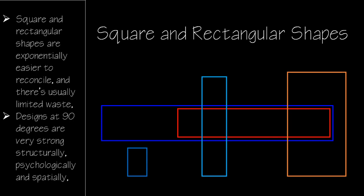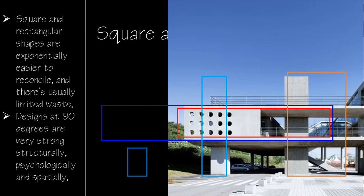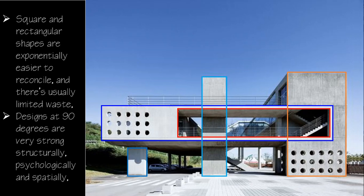The square and rectangular shapes are exponentially easier to reconcile, and there is always limited waste, whether at design level or even at construction stage. You have these designs at 90 degrees that are very strong structurally, psychologically, and even spatially.